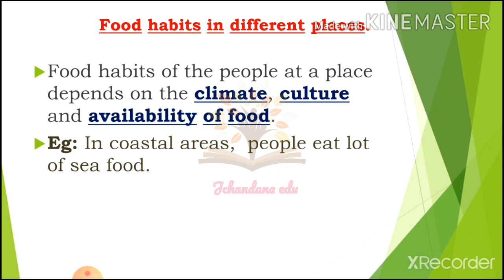For example, in coastal areas, people eat a lot of seafood. That is why they eat fish, prawns, and crab.